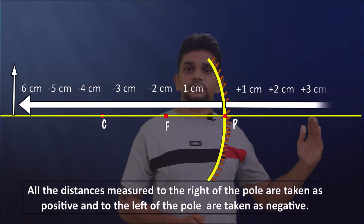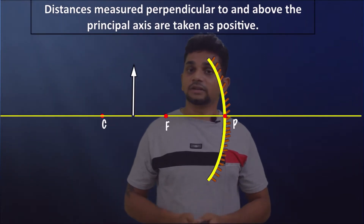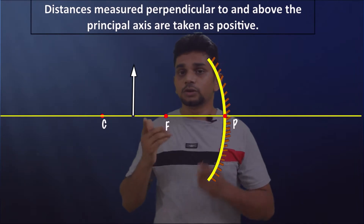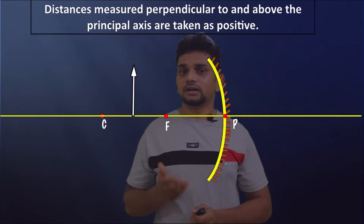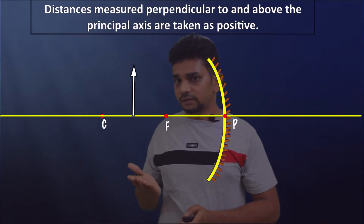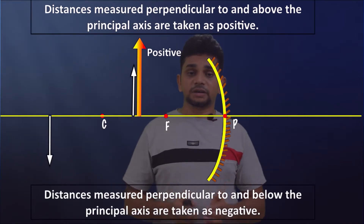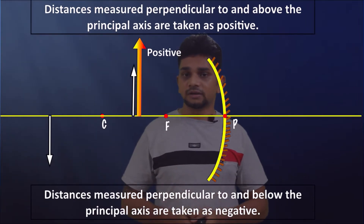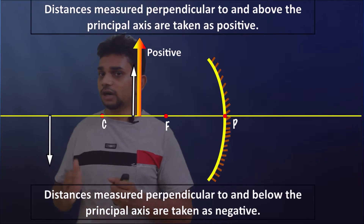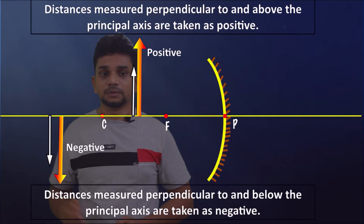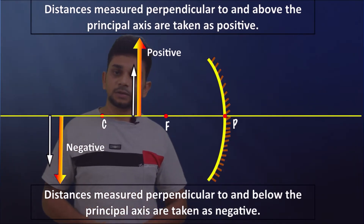Distances measured perpendicular to and above the principal axis are taken as positive. For example, if you are measuring the height of an object — the object is perpendicular to the principal axis — we start measuring from the bottom. Measurement in the upward direction is positive. Distances measured perpendicular to and below the principal axis are taken as negative. Measuring the height of an image in the downward direction gives a negative value.